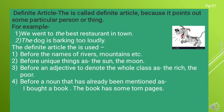The definite article 'the' is used: number one, before the names of rivers, mountains, etc.; number two, before unique things; number three, before an adjective to denote the whole class, as in the rich, the poor; number four, before a noun that has already been mentioned. For example: I bought a book — the book has some tall pages. In the first sentence we don't know anything about the book, but in the second sentence we know it refers to the book from the first sentence.